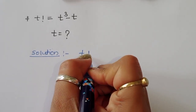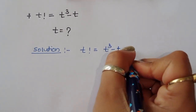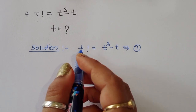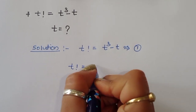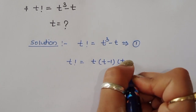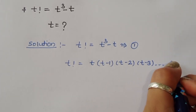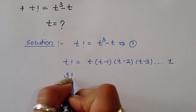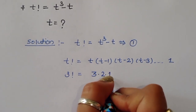Given question is factorial of t is equal to t cubed minus t — call this equation 1. Now, factorial of t can be written as t times (t minus 1) times (t minus 2) times ... down to 1. For example, factorial of 3 is equal to 3 times 2 times 1.